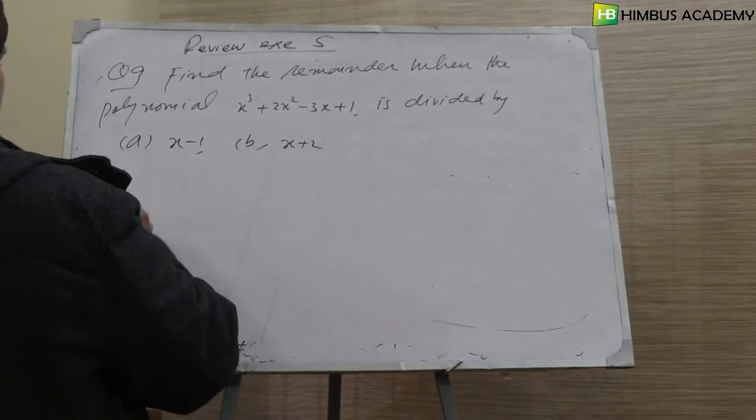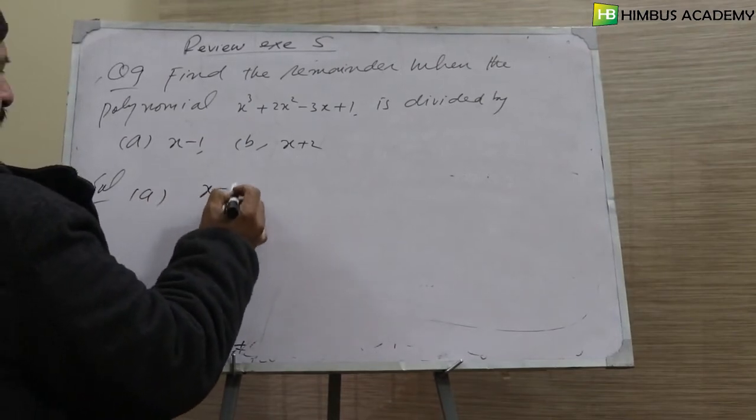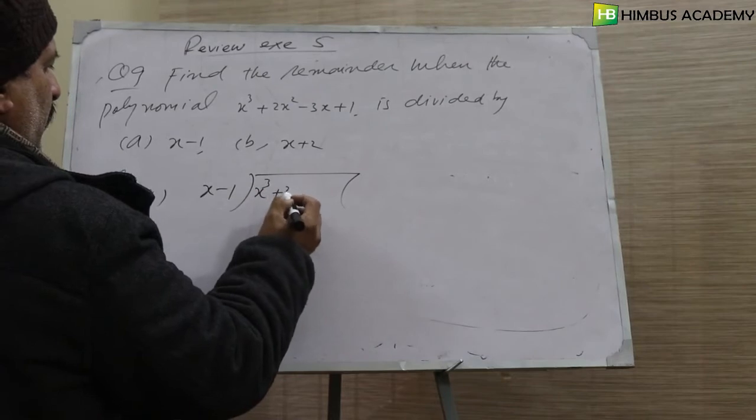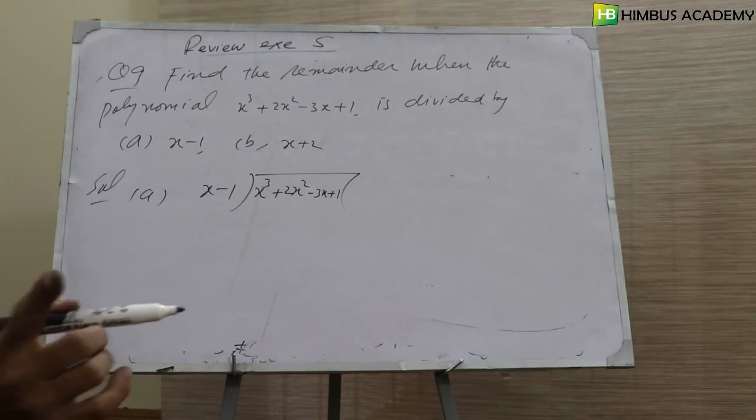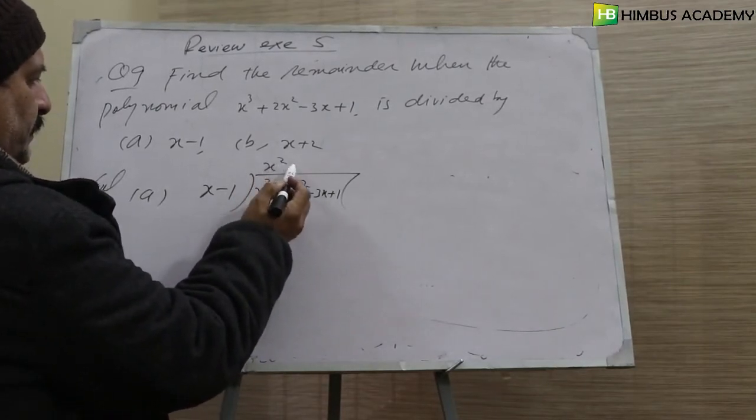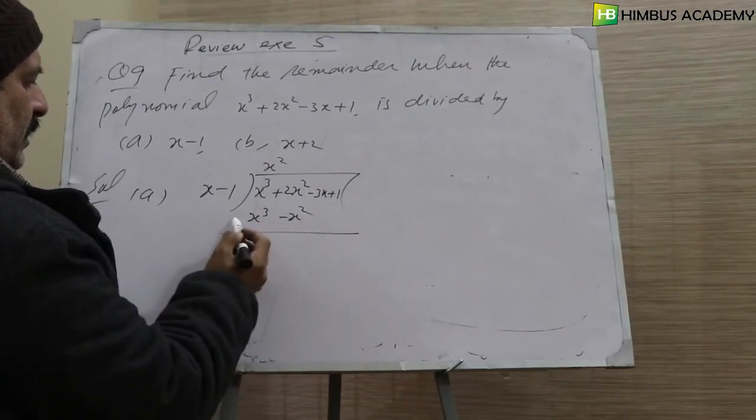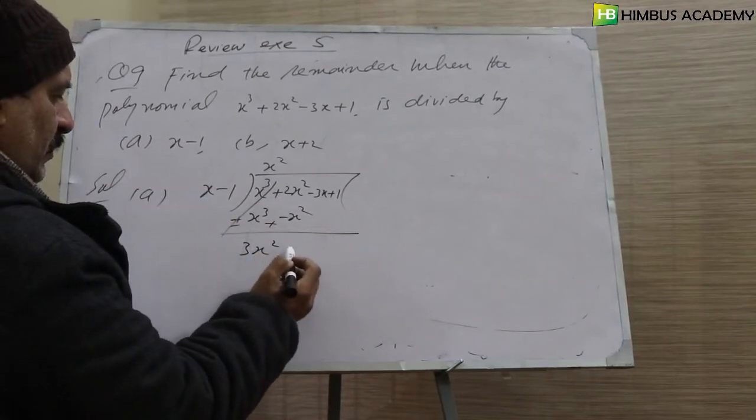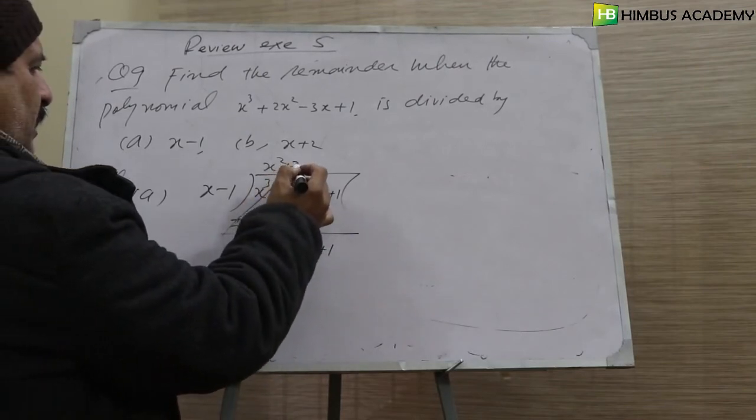For part A, we divide the polynomial x³ + 2x² - 3x + 1 by x - 1. Setting up the division to find the remainder.